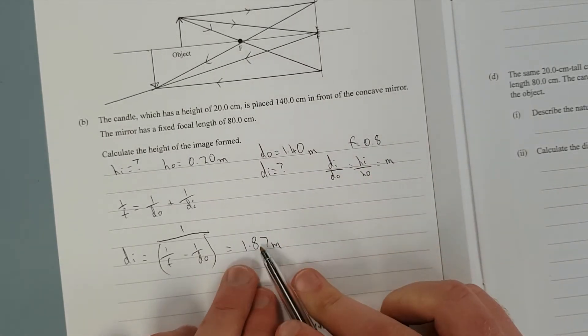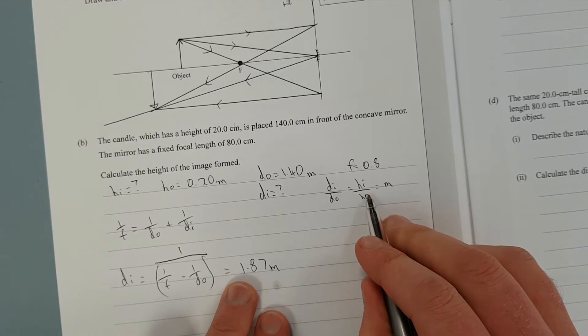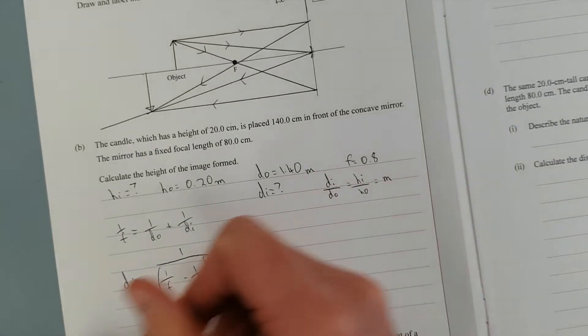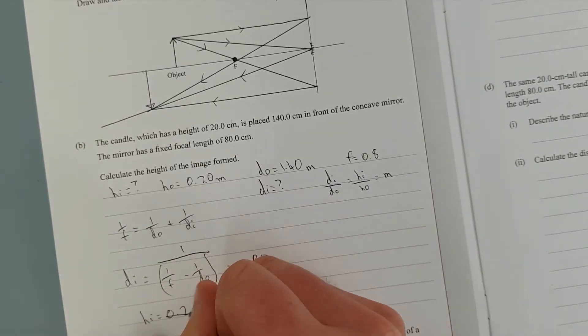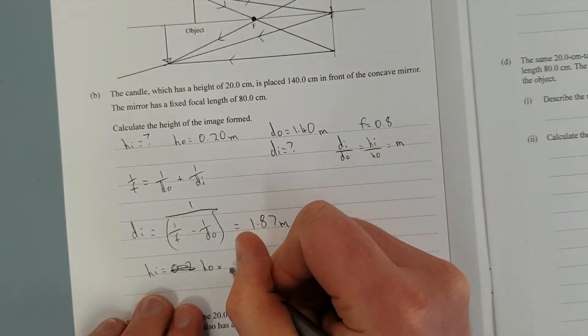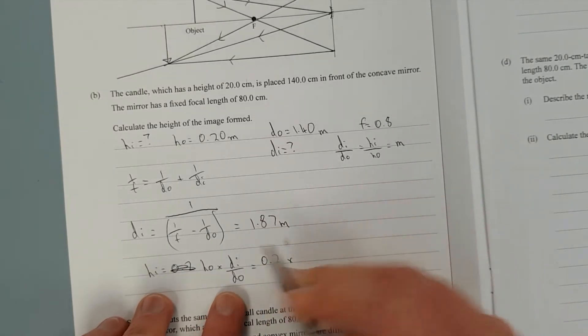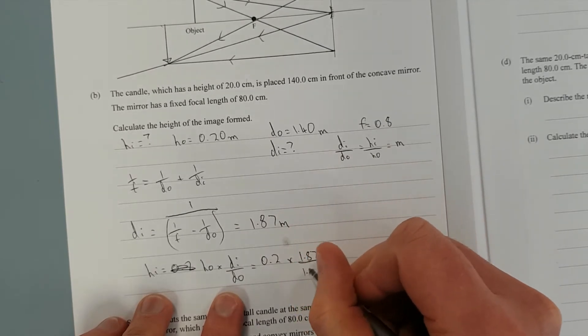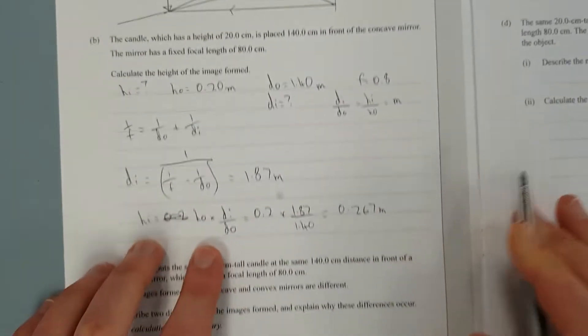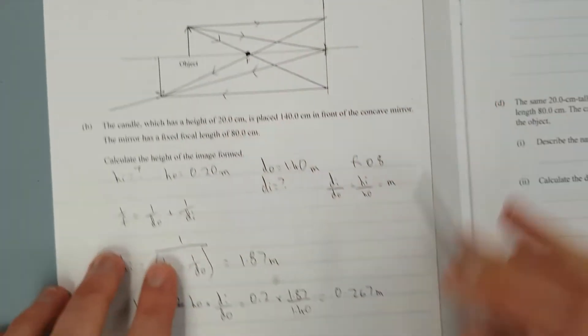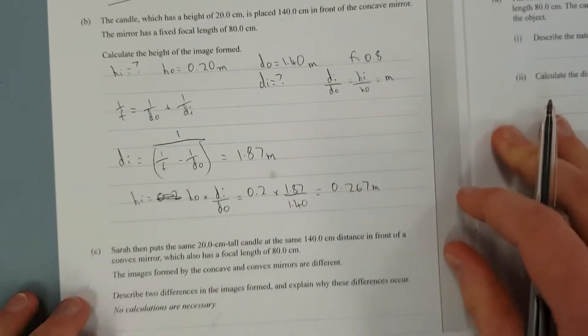Now we have, simply to plug it in. Or need to rearrange for HI, which is fairly simple. Just times both sides by HO. HI is equal to HO times DI over DO, which is going to be equal to 0.2 times 1.87 over 1.40 equals height of the image 0.267 meters. And we'll just do the sniff test. That image needs to be bigger than the object. 0.267, which is 26 centimeters, is larger than 20 centimeters.